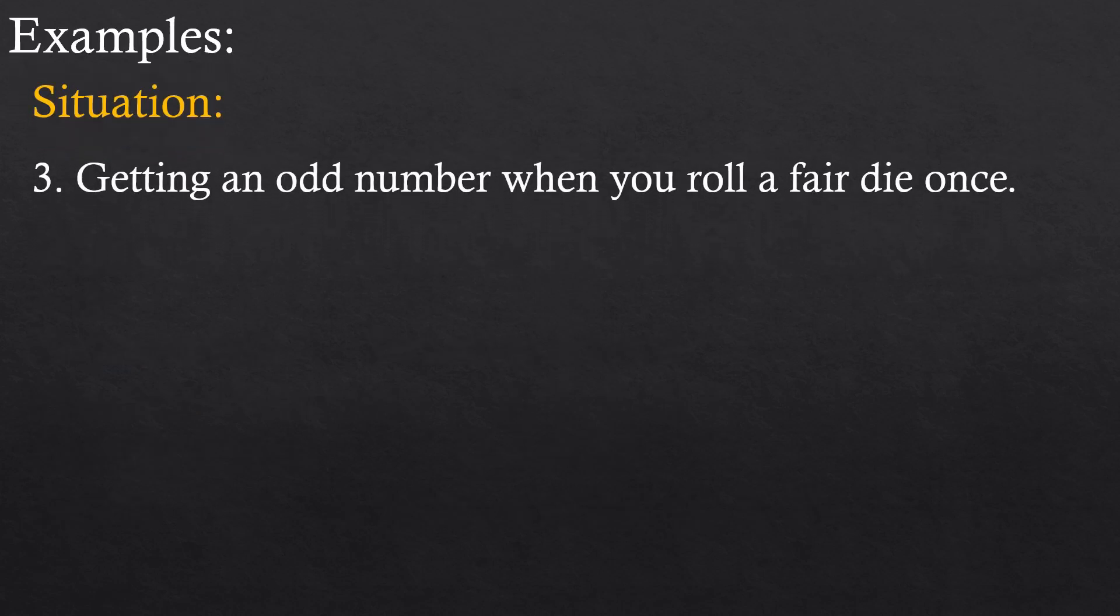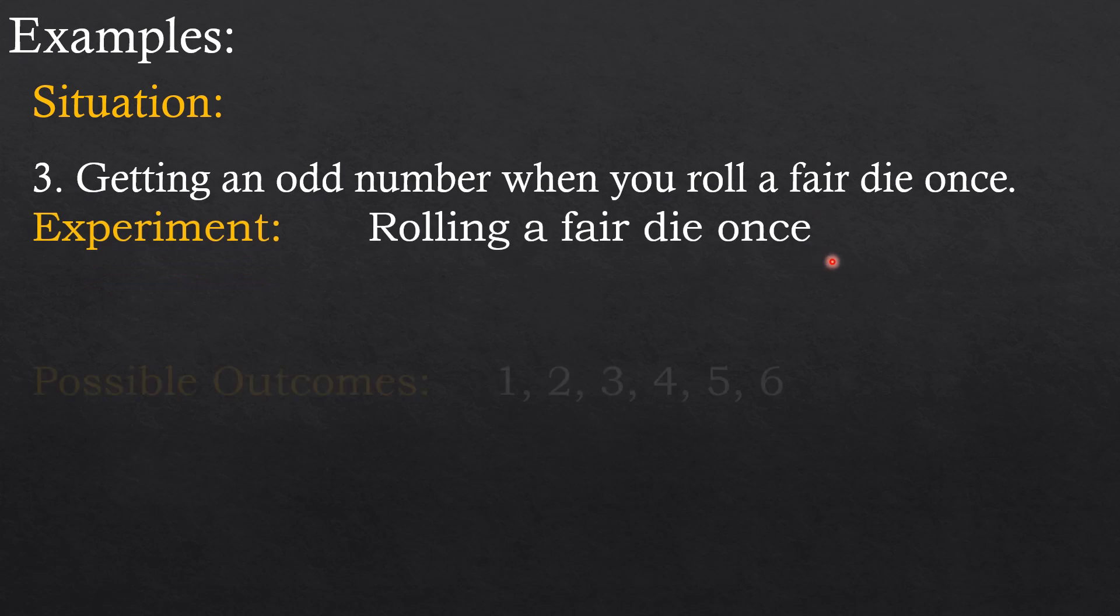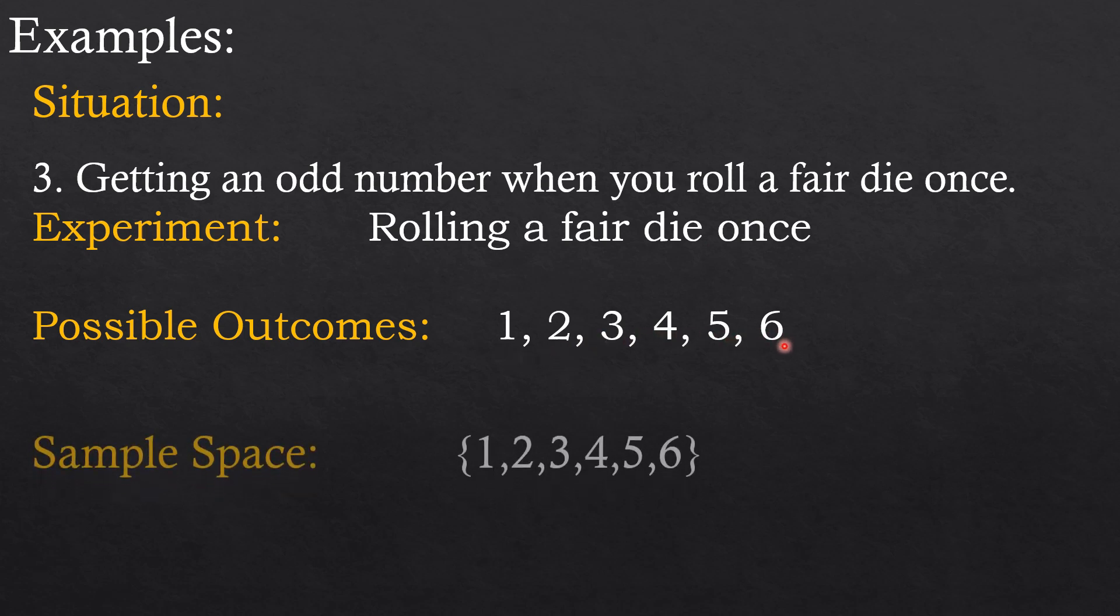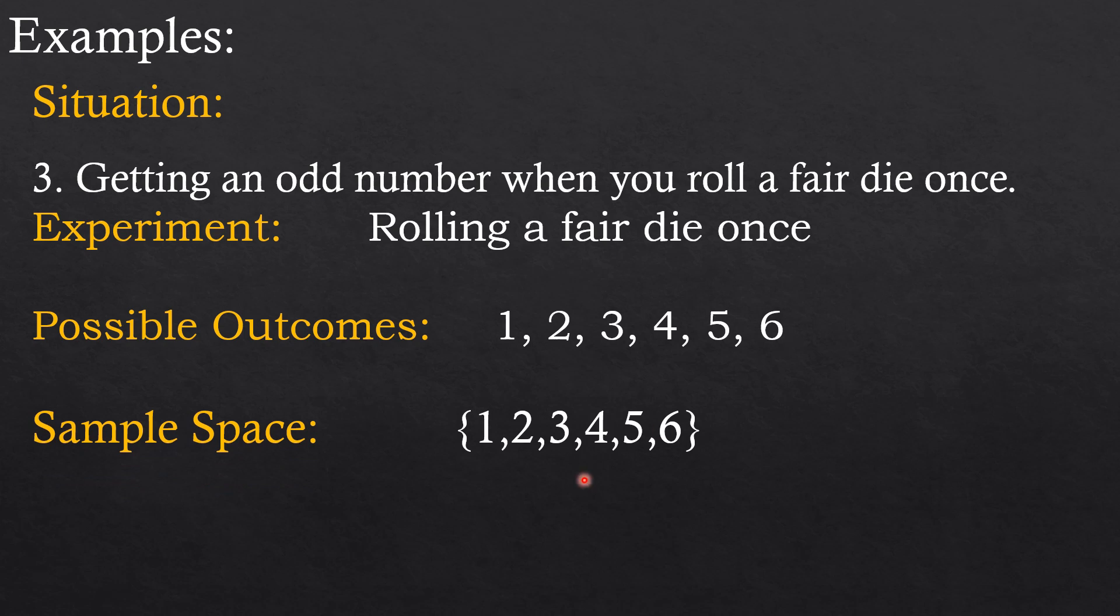Let's proceed to example number three: getting an odd number when you roll a fair die once. Experiment is rolling a fair die once. Possible outcomes: one, two, three, four, five, and six. The sample space is all the possible outcomes, and the event is an odd number.